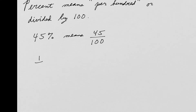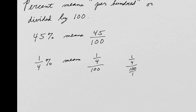A quarter of a percent means a quarter divided by a hundred. And of course, you could simplify this. Remember how to divide fractions? If I have one over four divided by one hundred, I can think of a hundred as a hundred over one, so the dividend stays the same and I multiply by the reciprocal of the divisor. This gives one over 400. So one fourth percent equals one over 400. That's all a percent means — per 100.